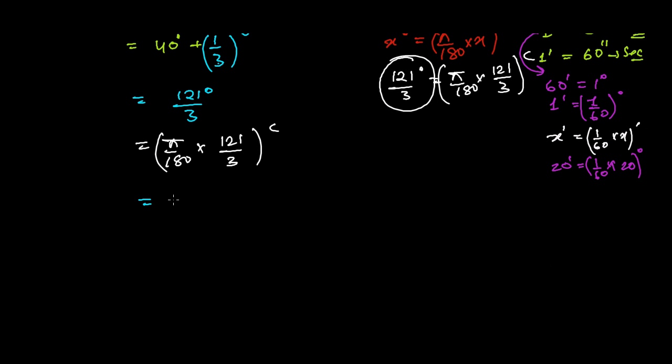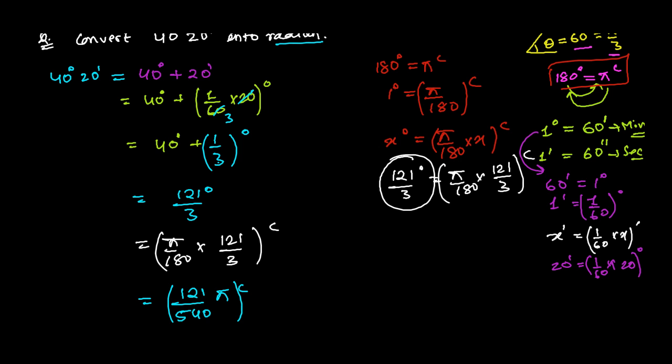Further, if I will rearrange, it will be 121 and 180 times 3, 540. So, 121 over 540 pi radian. So, this is our given angle, 40 degree, 20 minutes into the radian format.